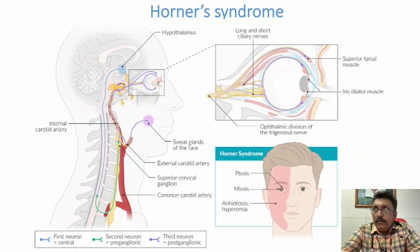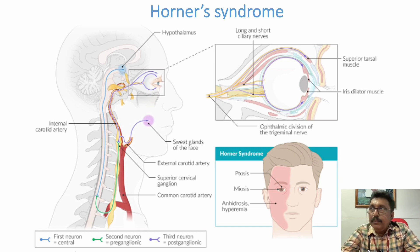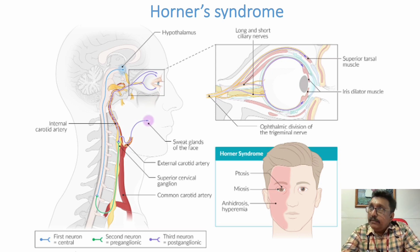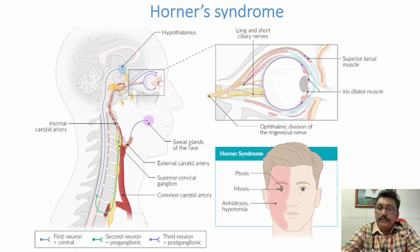Normally in third nerve palsy due to surgical lesions like aneurysm or trauma, you get dilated pupils. Whereas in diabetes-induced third nerve palsy — involving vasa nervorum — you can get normal pupils as well, because the pupillomotor fibers are spared.